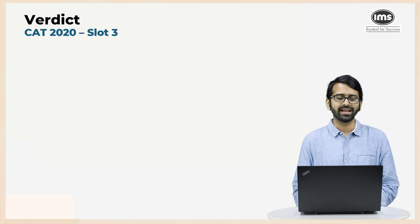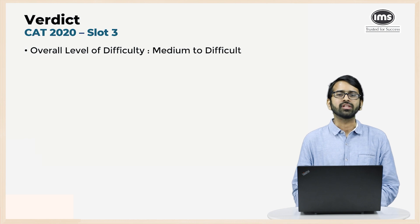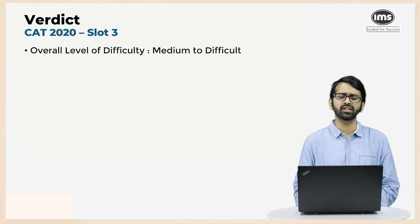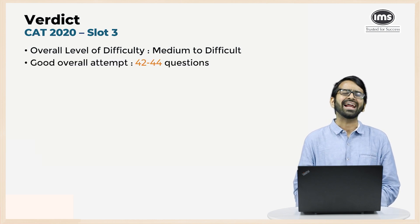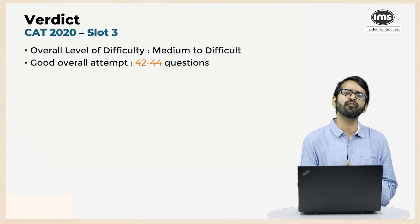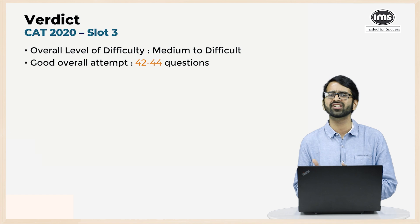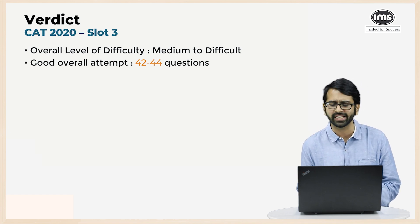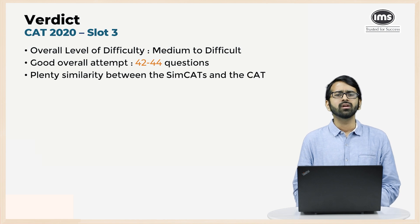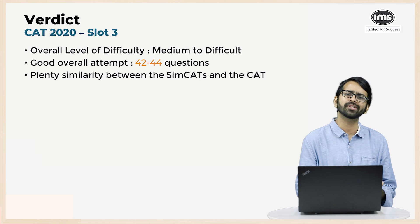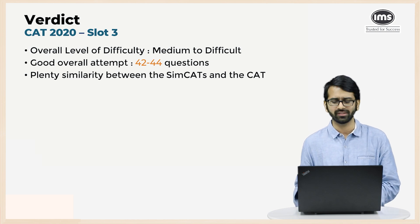Let's now talk about the overall verdict. CAT 2020 Slot 3 had an overall level of difficulty of medium to difficult, and a good overall attempt should be in the range of 42 to 44 questions if you are aiming for a 99 percentile. There was plenty of similarity between the SimCATs and the CAT this year.